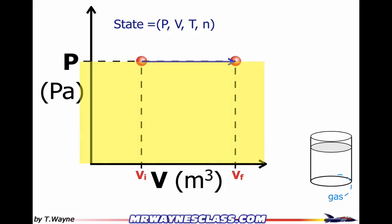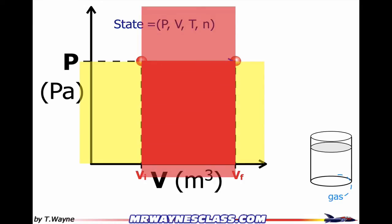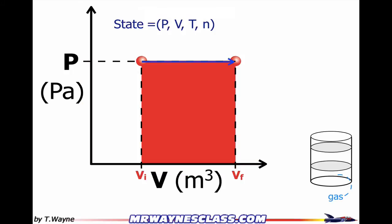The volume is going from an initial to a final. So if I look at the change in volume, which is always final condition minus initial, that would be something like this on the diagram. And you can see where they overlap in the dark red section. So if I take the height times the width, that gives me the work that's done, because it's pressure times the change in volume. Height times width — that's the amount of work that's done. So in this case, the area is equal to the work.